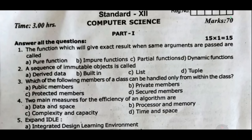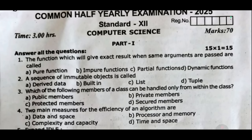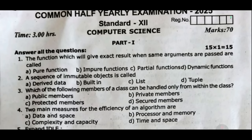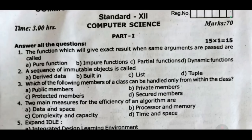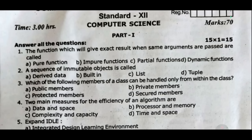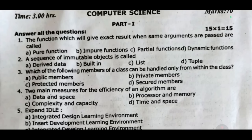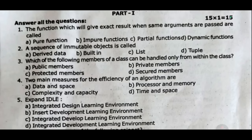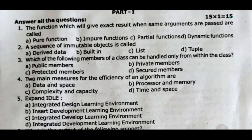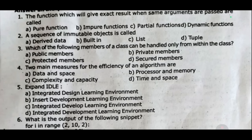So first, Part One — choose your questions and answer check. Question 1: The function which will give exact result when same arguments are passed is called dash. Question 2: A sequence of immutable objects is called dash. Question 3: Which of the following members of a class can be handled only from within the class — dash. Question 4: Two main measures for the efficiency of an algorithm. Question 5: Expand IDLE.